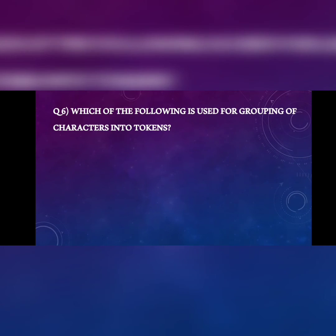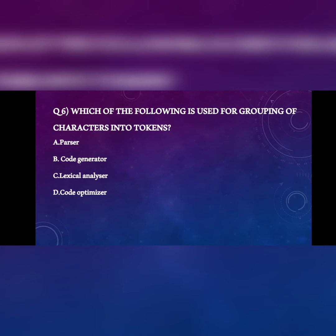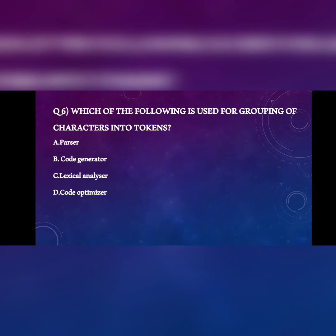Next question: which of the following is used for grouping of characters into tokens? A) parser, B) code generator, C) lexical analyzer, D) code optimizer. Lexical analysis groups tokens in the program language — keywords, constants, identifiers, strings, operators. So the answer is C, lexical analyzer.